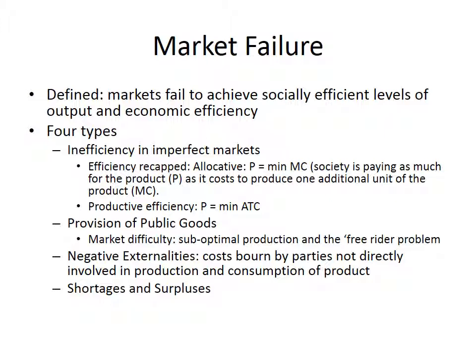We've dealt with economic efficiency, and the socially efficient level of output is related to this. Now, there are four types of market failure we're going to look at. The first of them, and perhaps the most frequent, is the inefficiency created by imperfect markets.